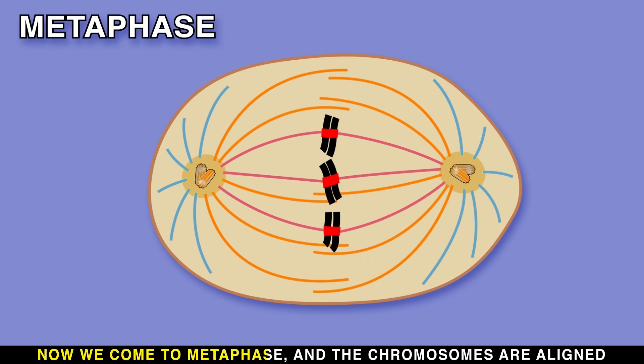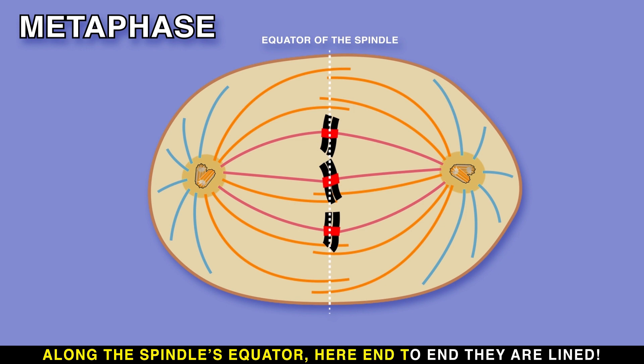Now we come to metaphase and the chromosomes are aligned along the spindle's equator, here end to end. Thanks to microtubules to which the sister chromatids latch, these microtubules to opposite poles of the spindle attach.